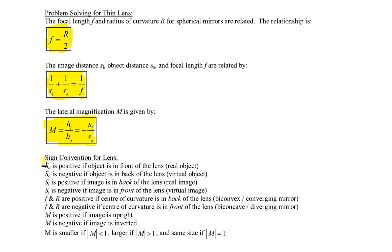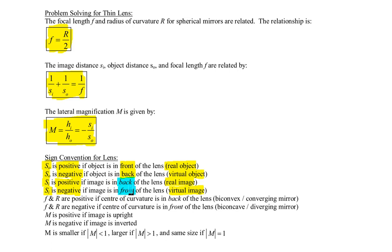What is the same? A real object is still considered to be in front of the mirror or lens and is still positive. A virtual object would be placed on the back of the lens or mirror — that hasn't changed. The image distance: a positive image distance still means a real image, and a negative image distance is still a virtual image. Let me show you what I mean by that.